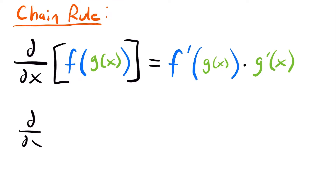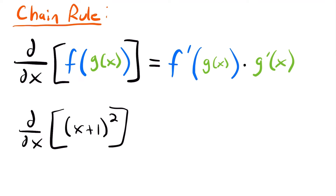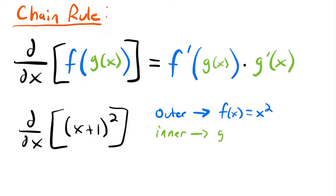Let's say we want to find the derivative of the quantity x plus 1 squared. We use the chain rule here because this is a composite function with an inner and outer function. The outer function is f of x equals x squared, and the inner function is g of x equals x plus 1. If we plug g of x into f of x, we get x plus 1 squared, which is exactly our function.